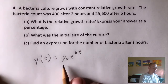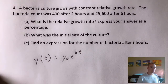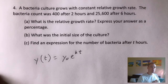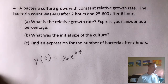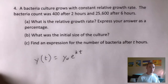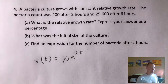Where Y sub zero is the initial population or the initial value of the thing that we're measuring, E is always going to be E, and K is a constant which is the relative growth rate. So K is kind of what we're getting at for part A — to find the relative growth rate of this population of bacteria.